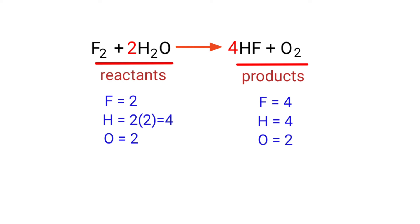Now we need to balance the fluorine atoms. To do this we need to put a coefficient of two in front of F₂.